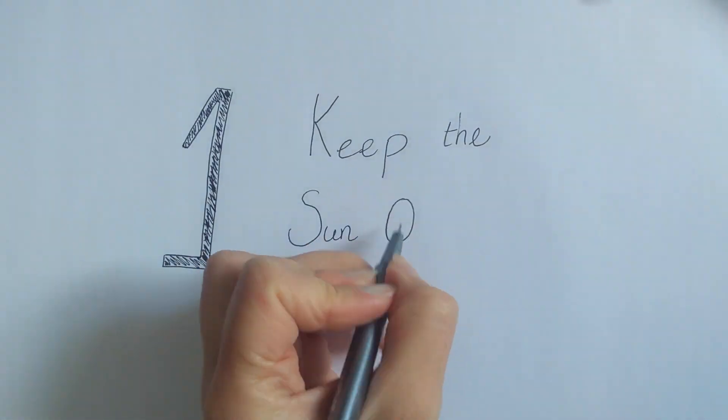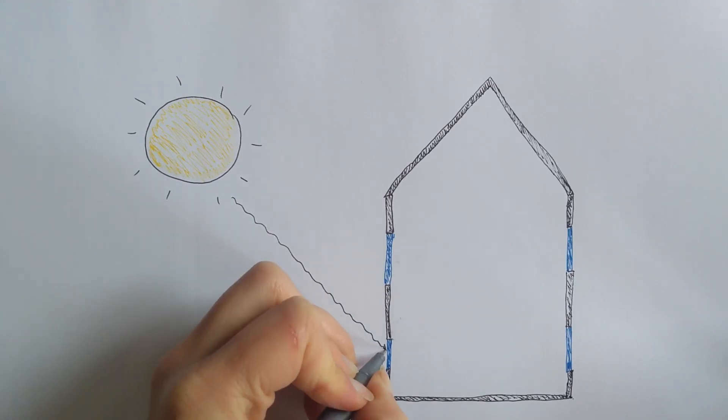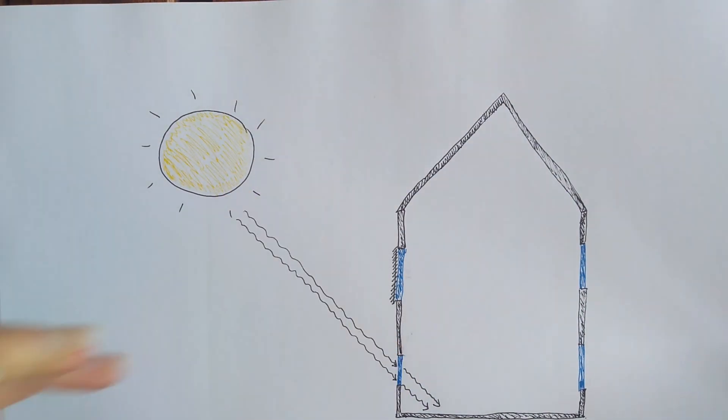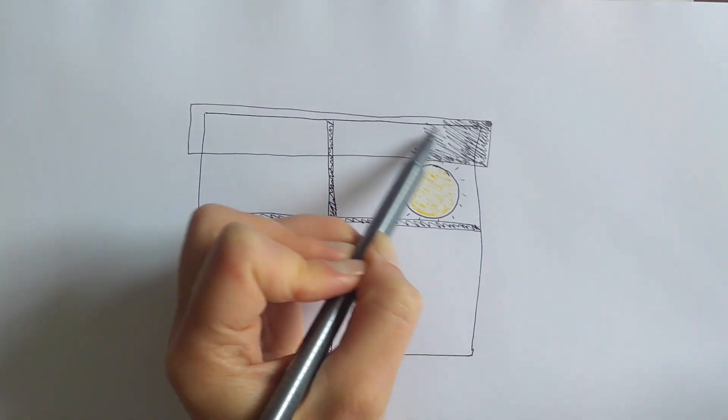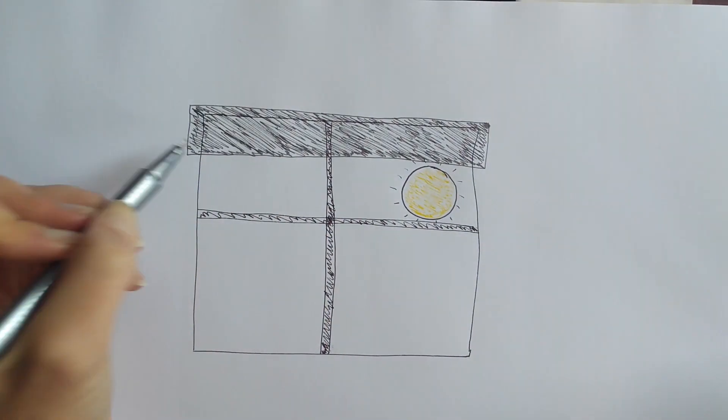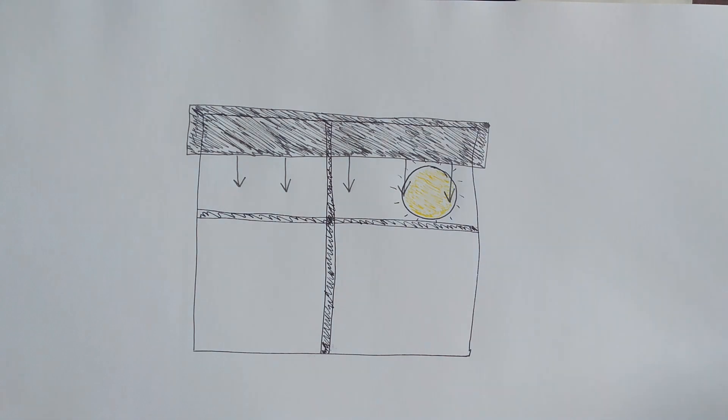Number one, keep the sun out. If you have external blinds or shutters outside, close them during the day, especially when the sun shines on them. If you don't have external blinds and you can't easily install them, then close your curtains or blinds inside.